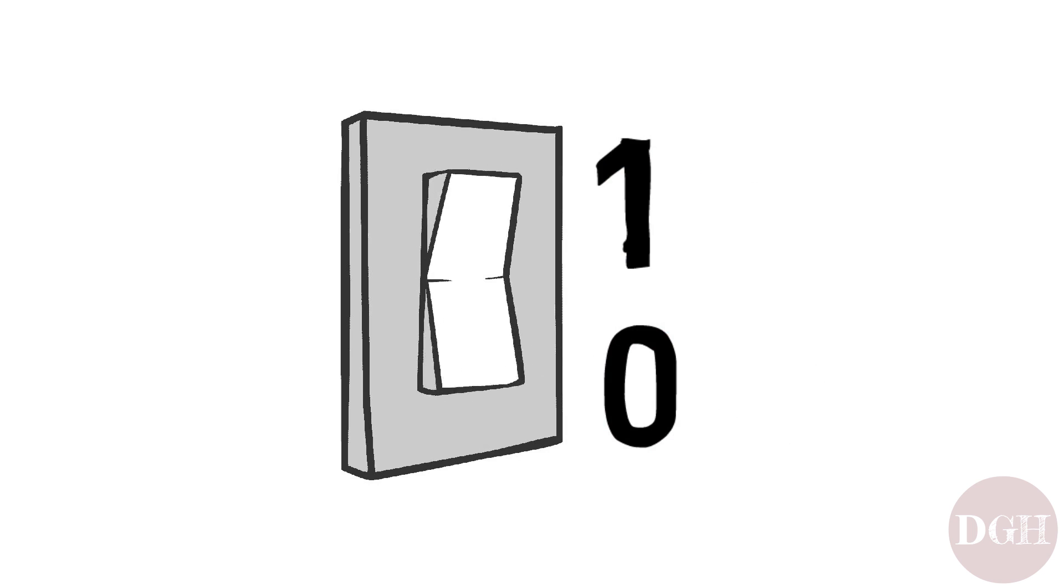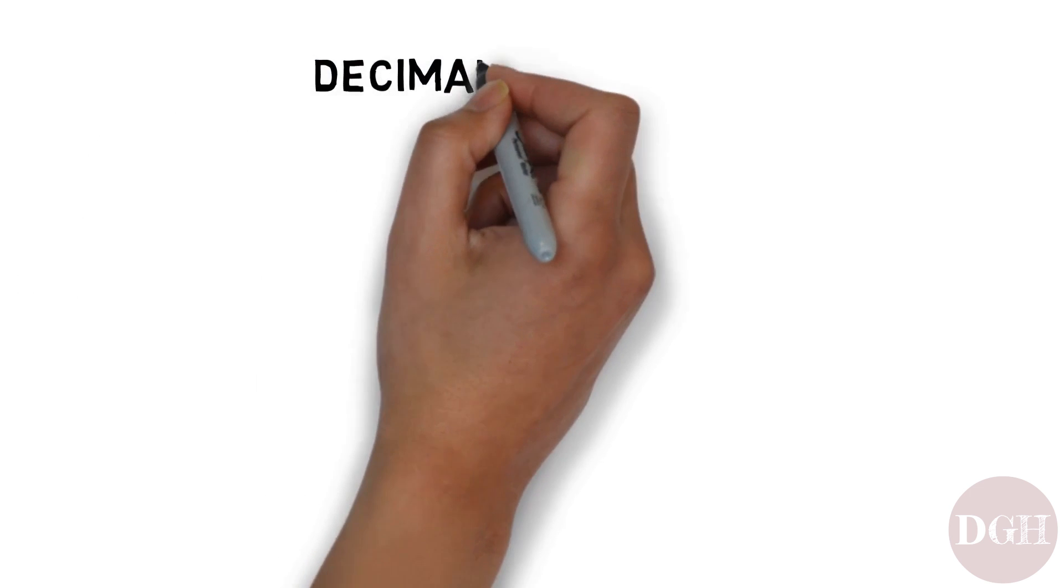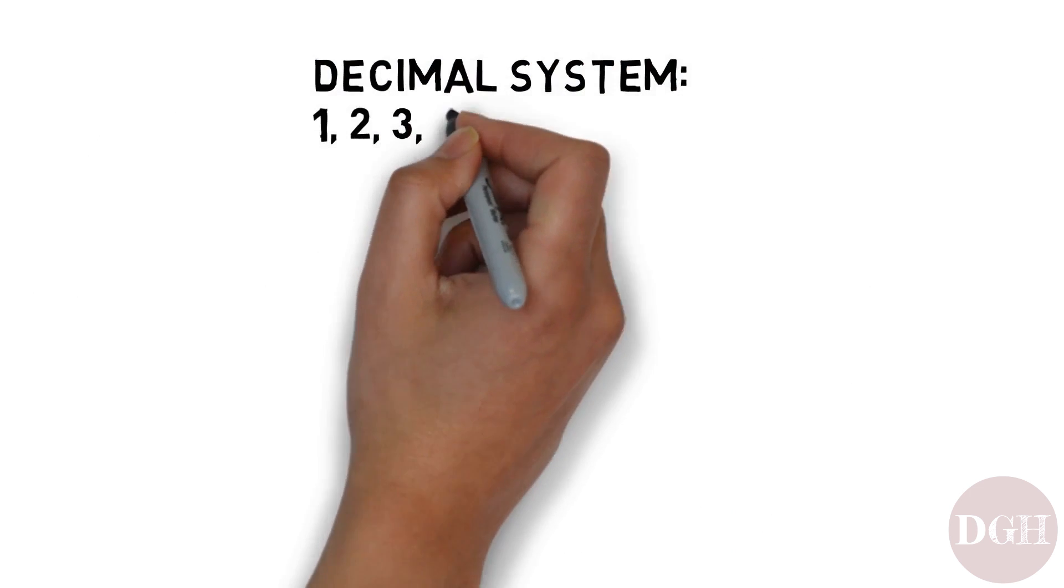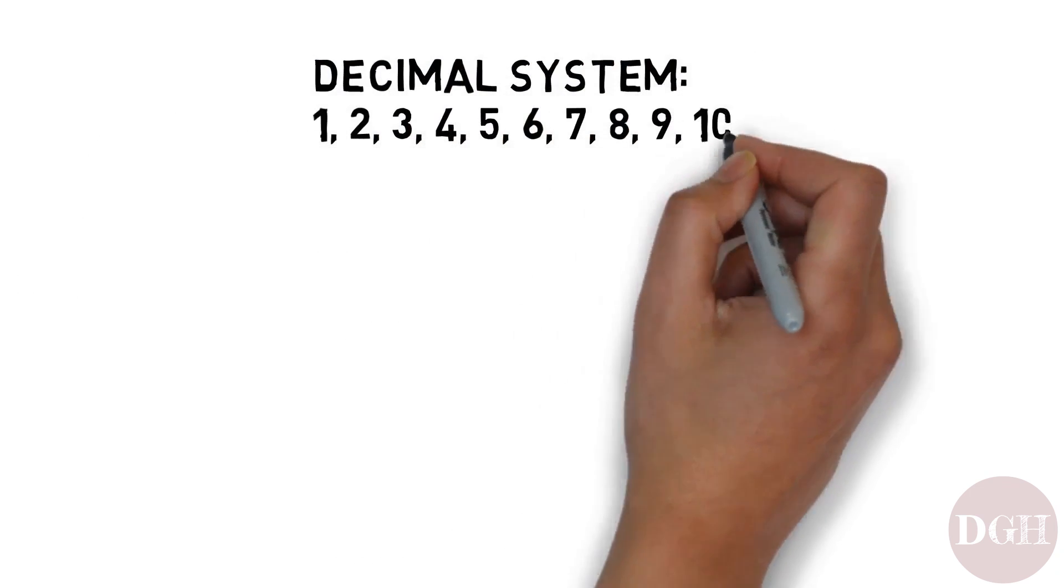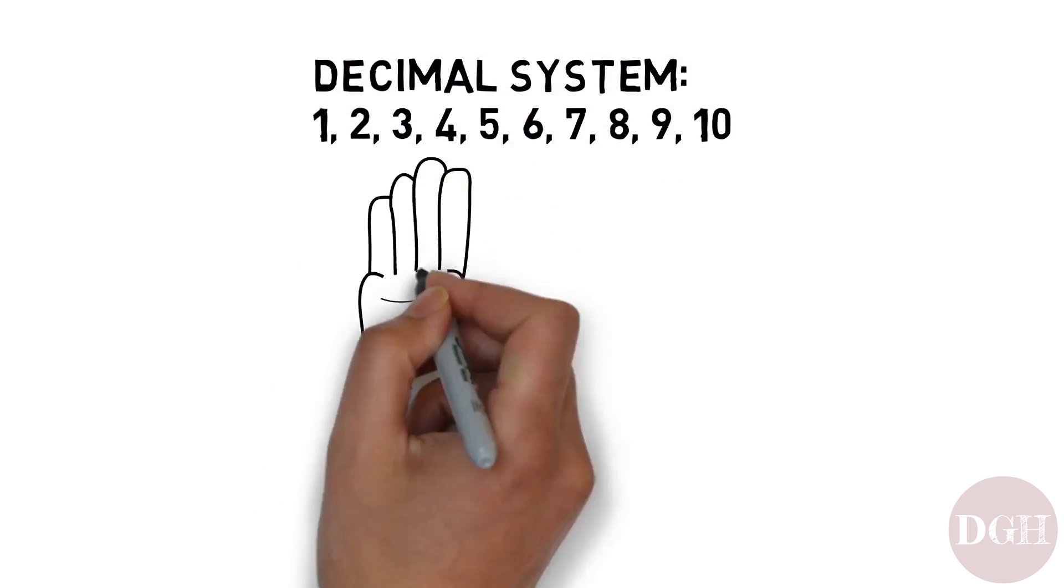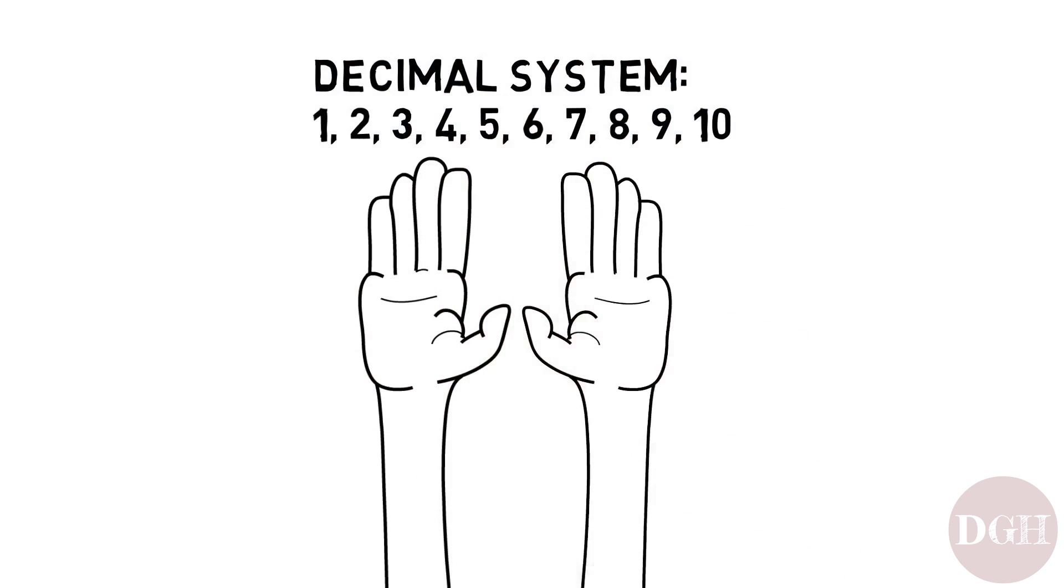To better understand binary, let's take a quick look at the number system we humans use most of the time, the decimal system. The decimal system is a base 10 number system. We use the decimal system because humans have 10 fingers, so it makes sense to us to count in groups of 10.